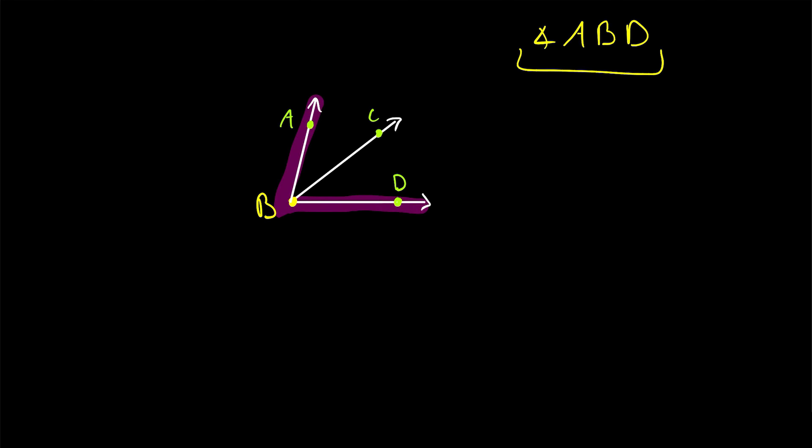This naming convention for angles uses two points on the rays of the angle that are not equal to the vertex. And then in between those points, in the name of the angle, is the vertex of the angle, B in this case. So remember, when naming your angles, the vertex of the angle always goes in the middle of the name.